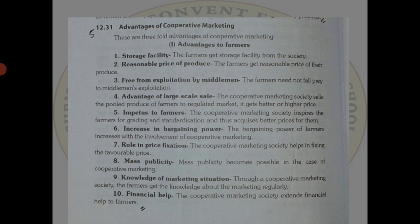The advantages of cooperative marketing to farmers: First, storage facilities are easily provided. Second, reasonable prices are received for their produce. Third, they are free from exploitation by middlemen since middlemen are not included. When produce is sold at a large scale, they get better and higher prices. Marketing societies also inspire peasants to produce more because all facilities are available to them. Bargaining power increases as produce can be held longer in godowns and warehouses.